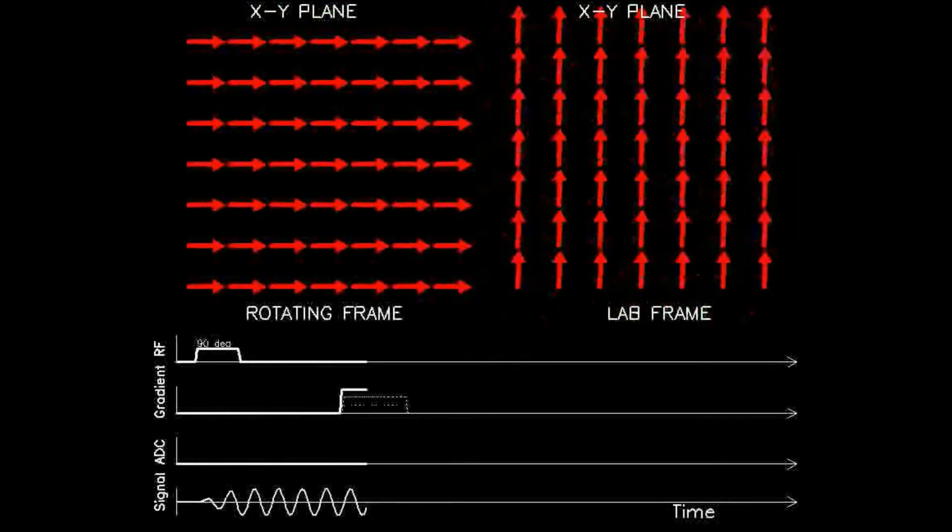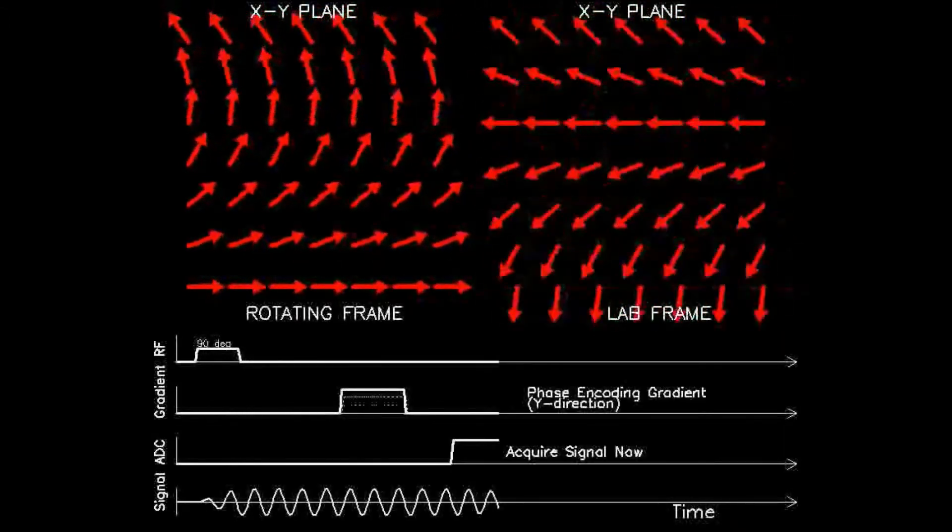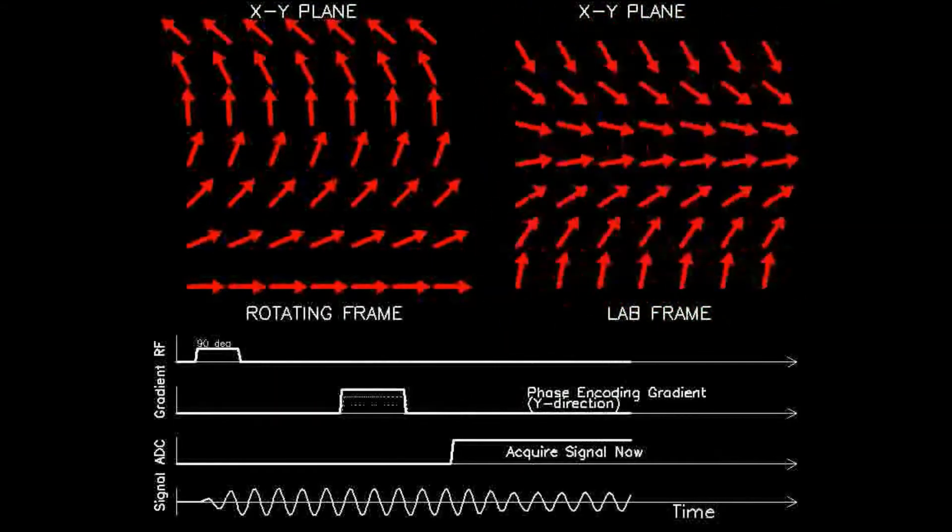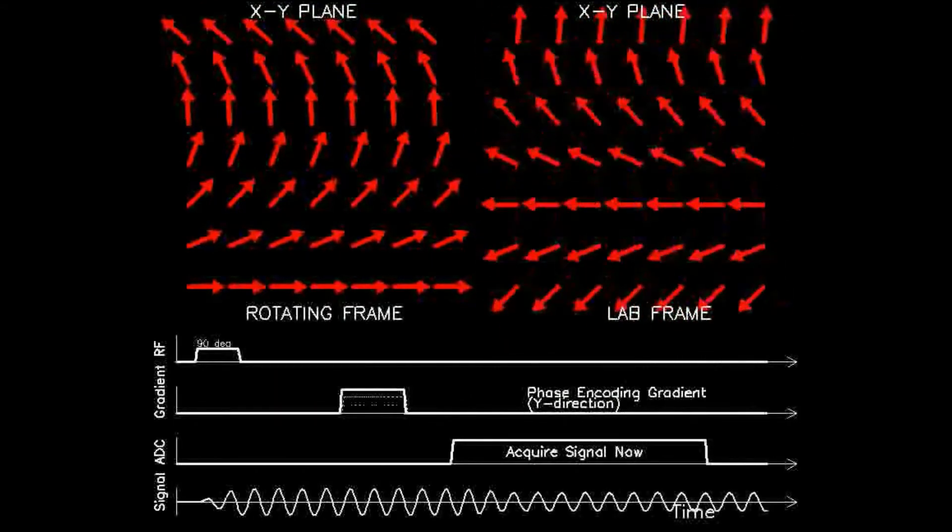Thus, all spins along a row are labeled or phase encoded, all due to the impressed gradient that was momentarily applied.